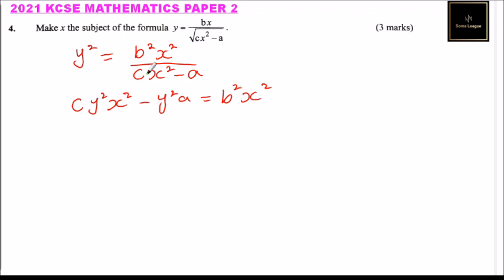So let's take b squared x squared to this side and y squared a to the other side. We have cy squared x squared minus b squared x squared equals y squared a.